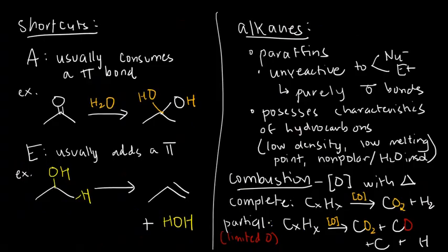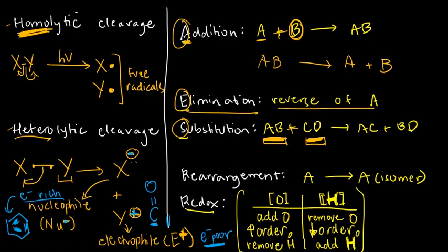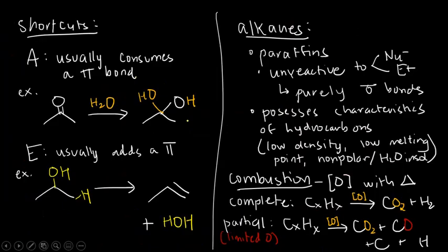Now, there are shortcuts for reactions. Like, remember, we have three main patterns: addition, elimination, and substitution. We have shortcuts for that. Usually, if I have an addition reaction, in order for me to combine two things completely, we often consume a double bond or a pi bond. Let's say I have a reaction between a ketone, this one, and water.